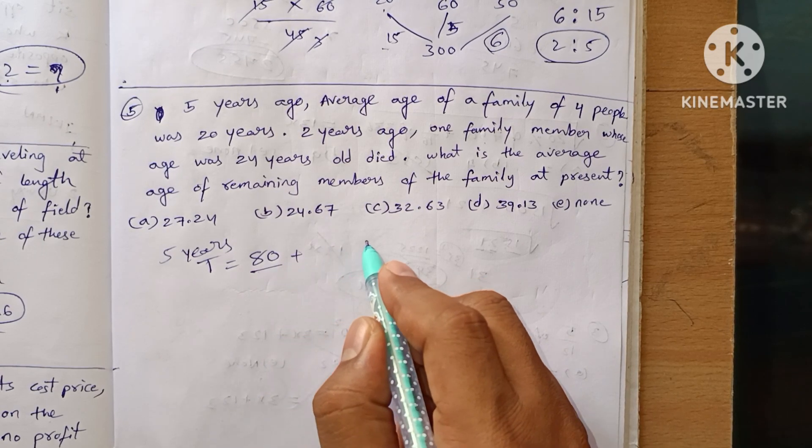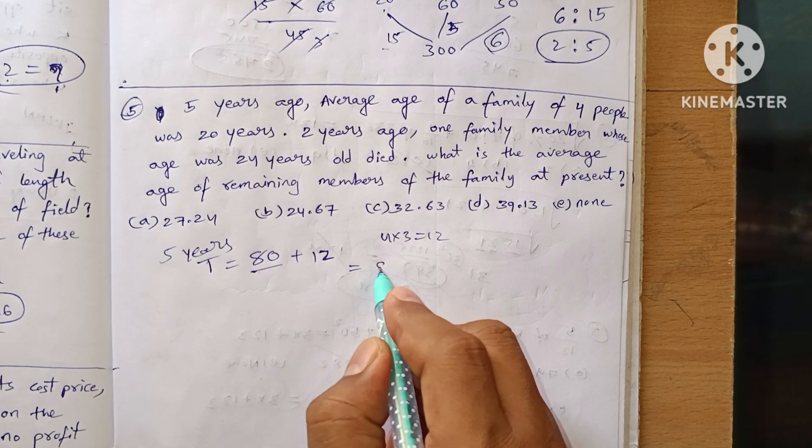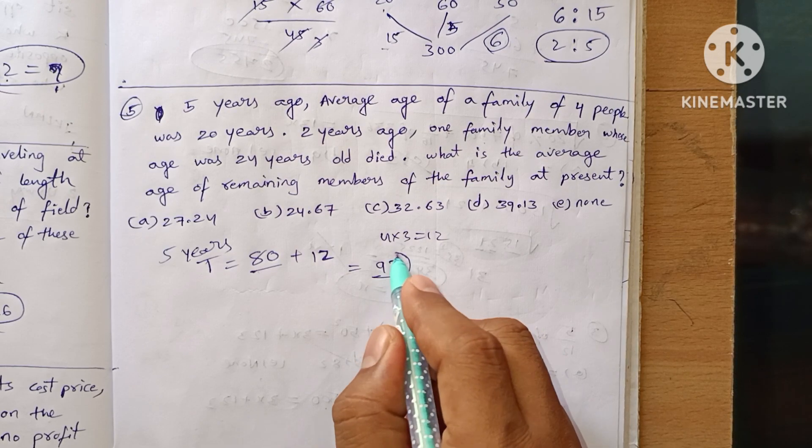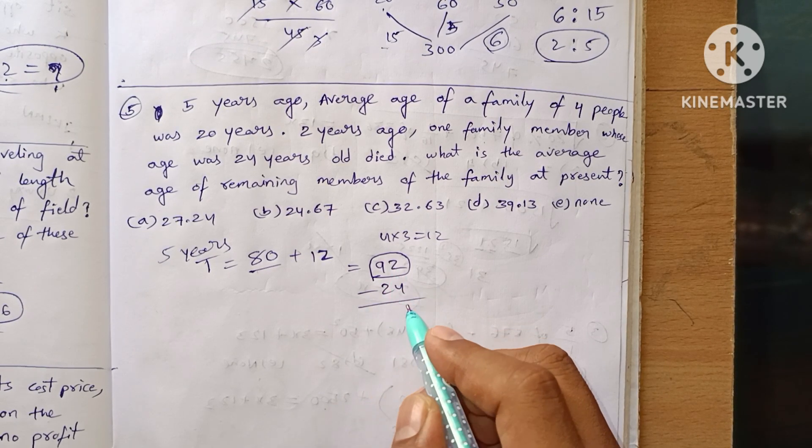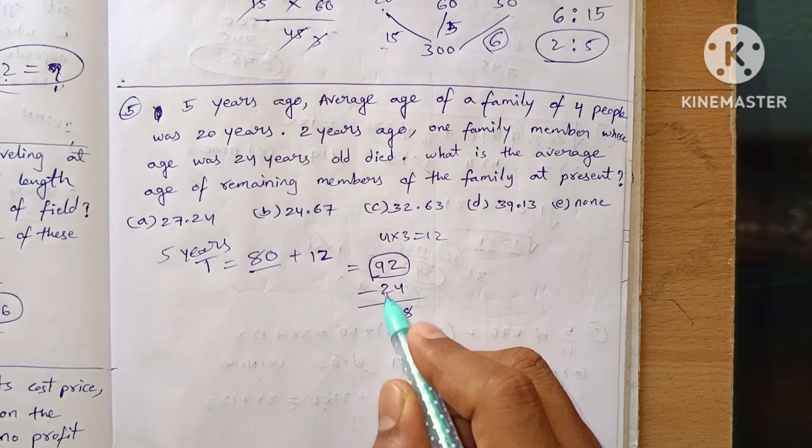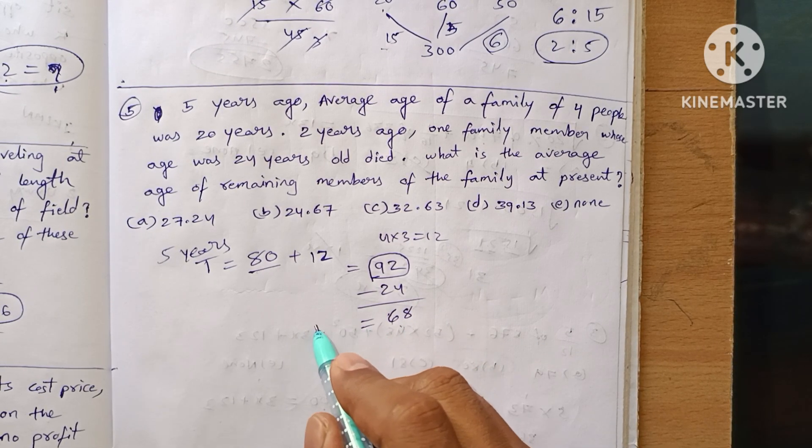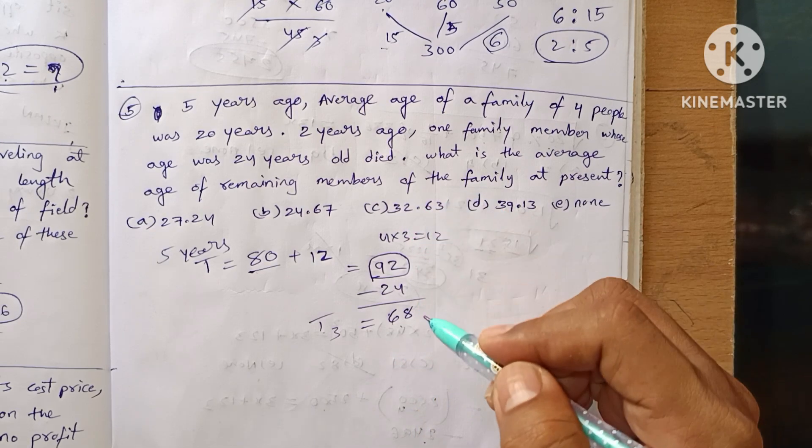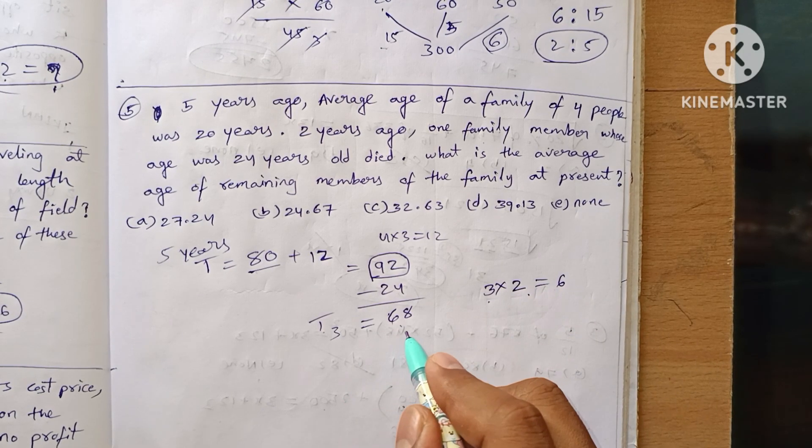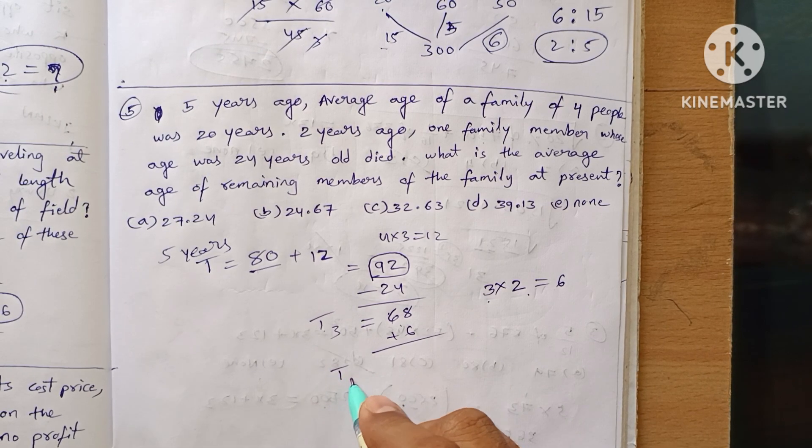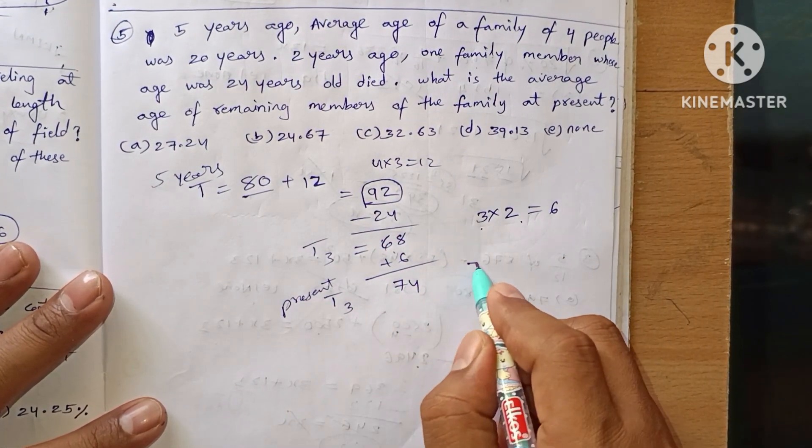From five years ago to two years ago is three years. All four members survived for three years, meaning 4 × 3 = 12 years were added. So 80 + 12 = 92. Then a person of age 24 died, so the total becomes 92 - 24 = 68. Now at present, these three people come to the present. They come forward two years, so we add 3 × 2 = 6. So 68 + 6 = 74.